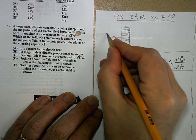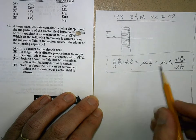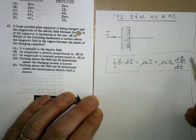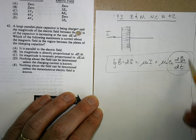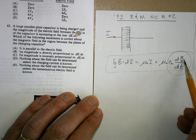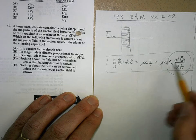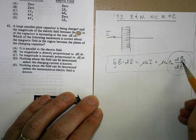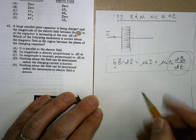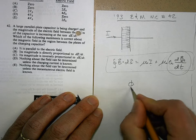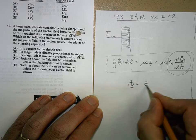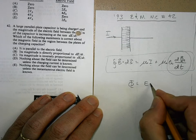Now look, this i is the current flowing in here, which is the equivalent of the current, the rate of change of magnetic flux. But you know that electric flux is E dotted with A.